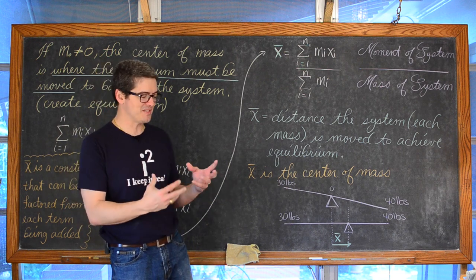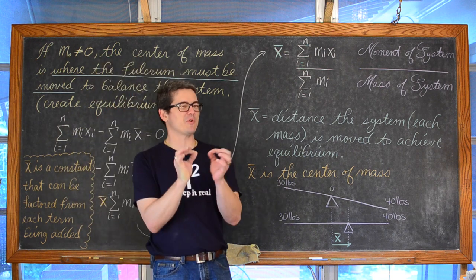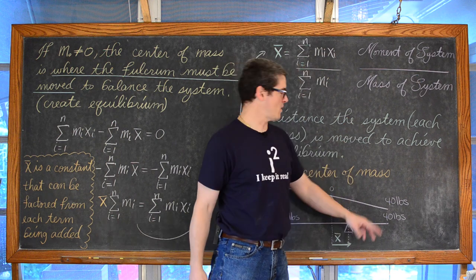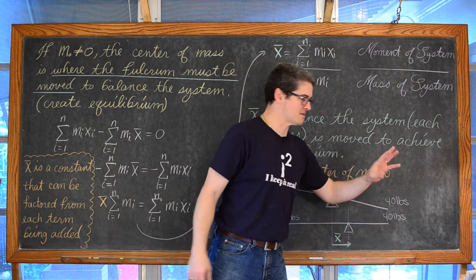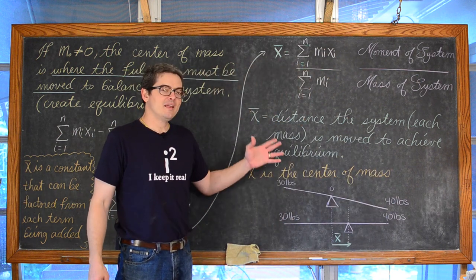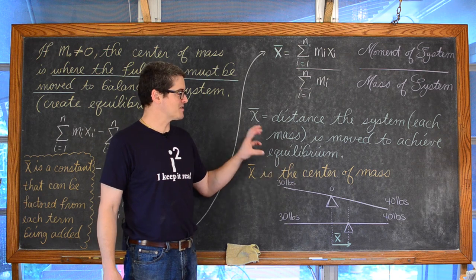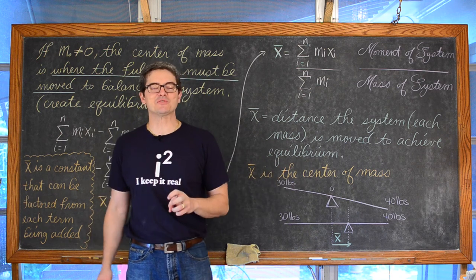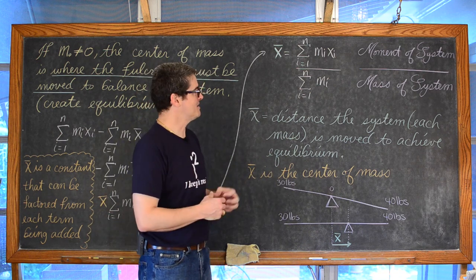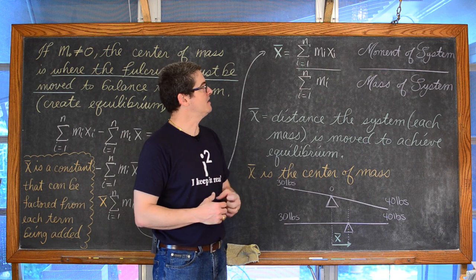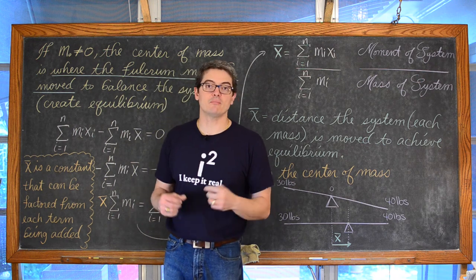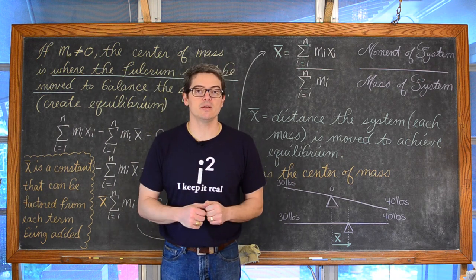My example of the teeter-totter falls apart just a little bit, because that teeter-totter has mass as well, and there will be some mass of that board behind the child and so on. But that is hopefully good enough for your understanding of what x-bar is and how it is ultimately going to be the location of the center of mass in a one-dimensional system.